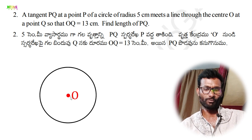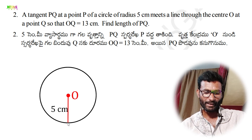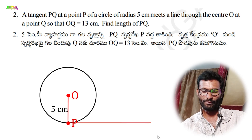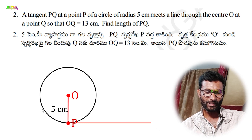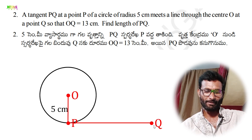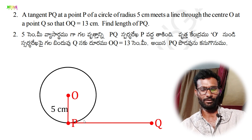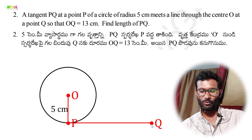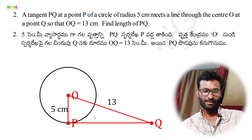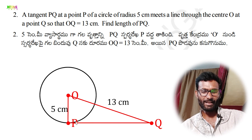In the diagram, P is the point of tangency on the circle, Q is the exterior point, and PQ is the tangent. OQ is 13 centimeters. Since the radius and the tangent are perpendicular at the point of contact, this is a right-angled triangle with 90 degrees according to Theorem 1.